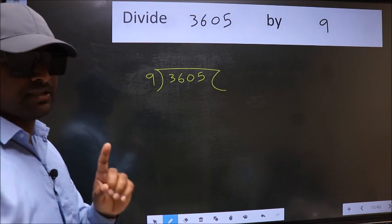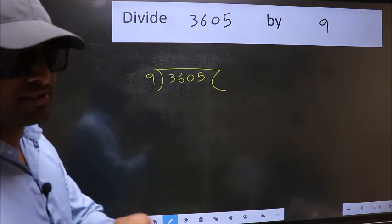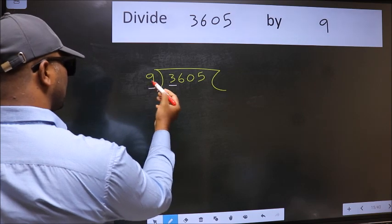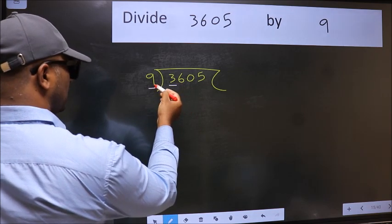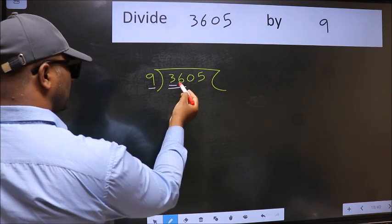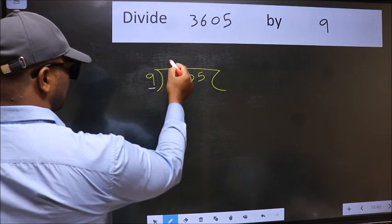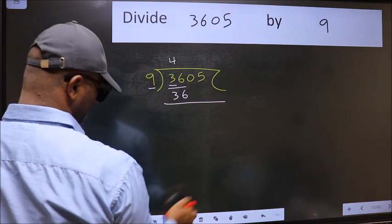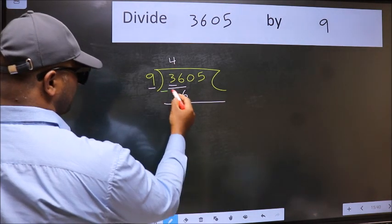Next, here we have 3 and here 9. 3 is smaller than 9, so we should take two numbers, 36. When do we get 36 in the 9 table? 9 times 4 is 36. Now we should subtract, we get 0.